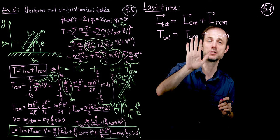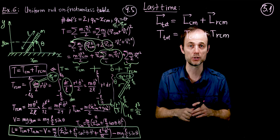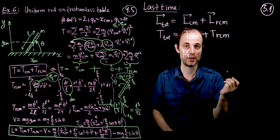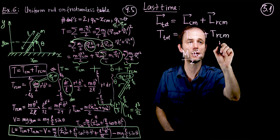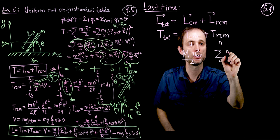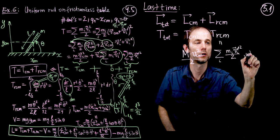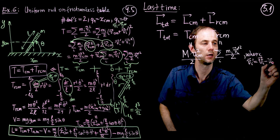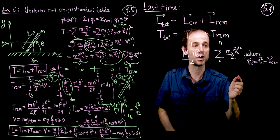Total kinetic energy is the sum of T_CM — kinetic energy associated with the motion of the center of mass — plus T_RCM, relative to the center of mass. T_CM was simply the total mass of the system times the velocity of the center of mass, divided by 2. And T_RCM was the sum over all the particles of m_i v_i-prime squared divided by 2, where v_i-prime is the difference between v_i and v_CM — the velocity relative to the center of mass.